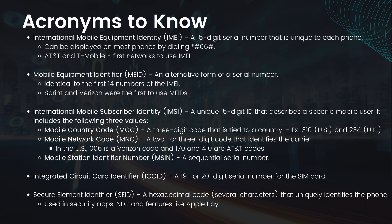Now for the acronyms you need to know for the certification exam. IMEI, International Mobile Equipment Identity, is a 15-digit serial number unique to each cell phone, displayable by dialing *#06#, and also found in settings — AT&T and T-Mobile were the first to use IMEI. MEID, Mobile Equipment Identifier, is an alternate serial number identical to the first 14 digits of the IMEI; Sprint and Verizon were the first to use MEIDs. IMSI, International Mobile Subscriber Identity, is a unique 15-digit ID describing a specific mobile user.